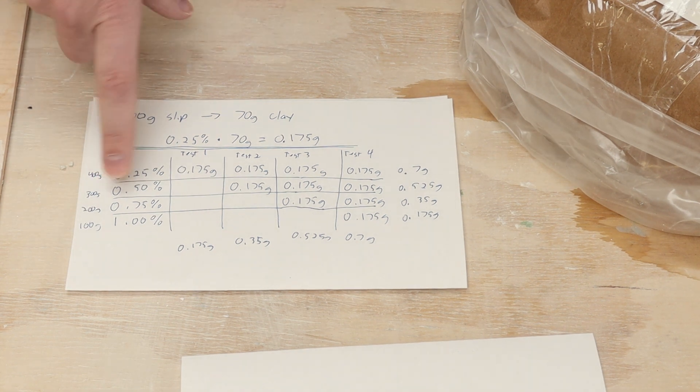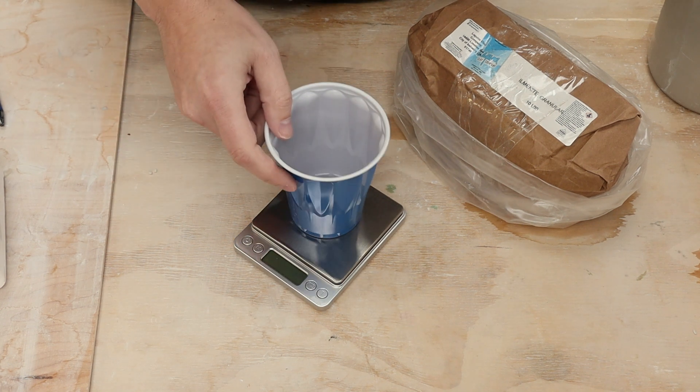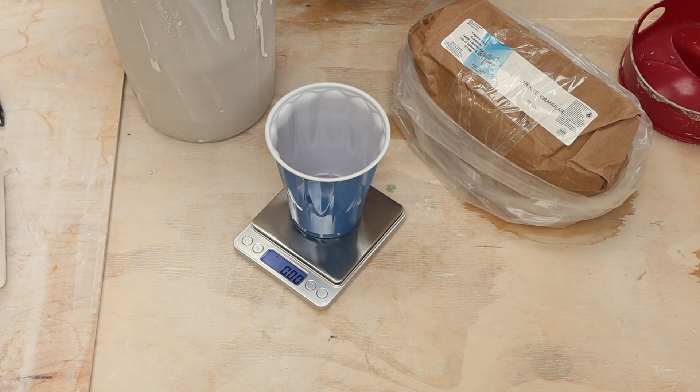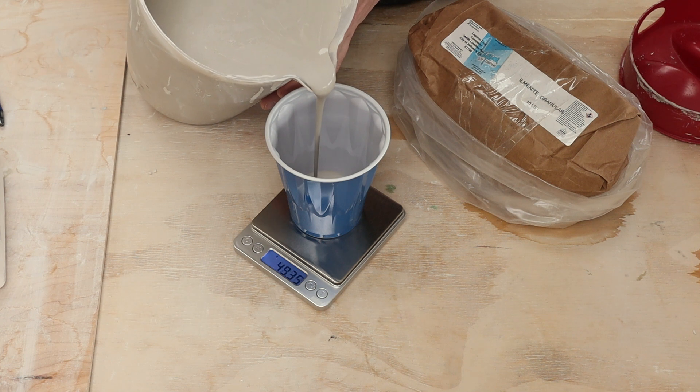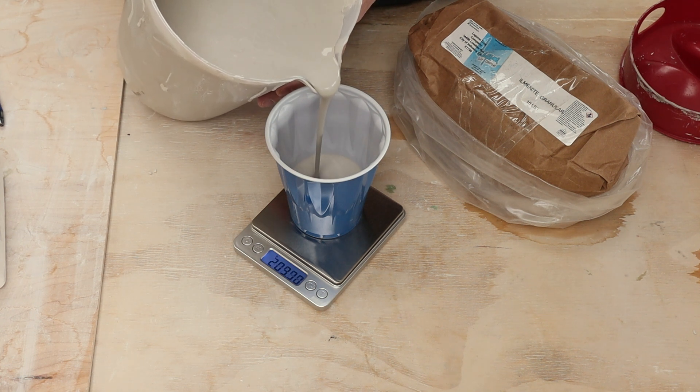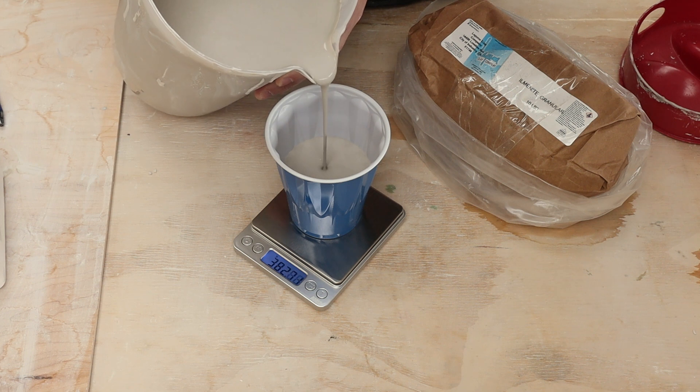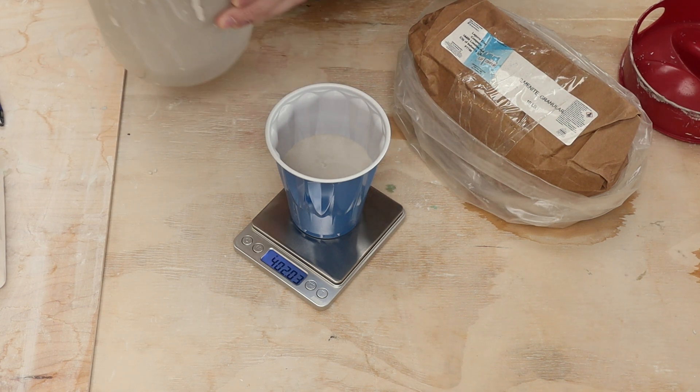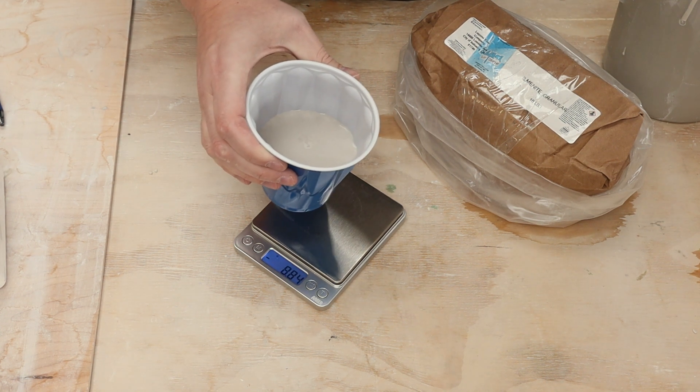So first up, I need 400 grams of slip and then I'll need 0.7 grams of my additive. I have a clean solo cup I'm going to use and my high precision scale and a freshly mixed up batch of slip. So I'm going to get to 400 grams. I'll need to add a little bit to the top. I'm going to lose some as I cast the test tiles, but I'm going to start out as good as I can get.